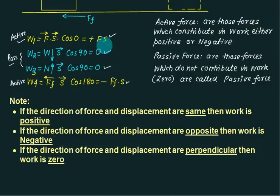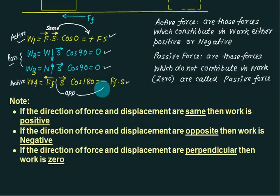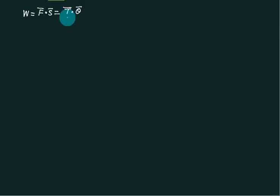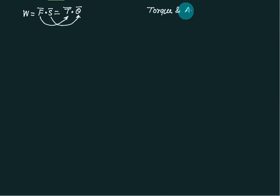First conclusion: if the direction of force and displacement are the same, work is positive. If the direction of force and displacement are opposite, work is negative. If they are perpendicular, work is zero. This is a dot product relationship. By analogy, torque corresponds to force and angular displacement θ corresponds to linear displacement s — both involve a dot product.